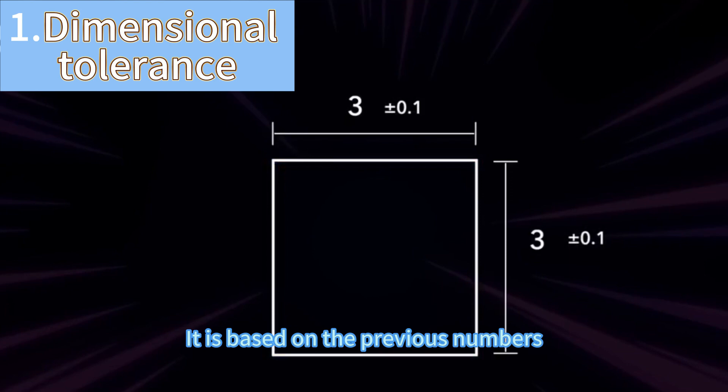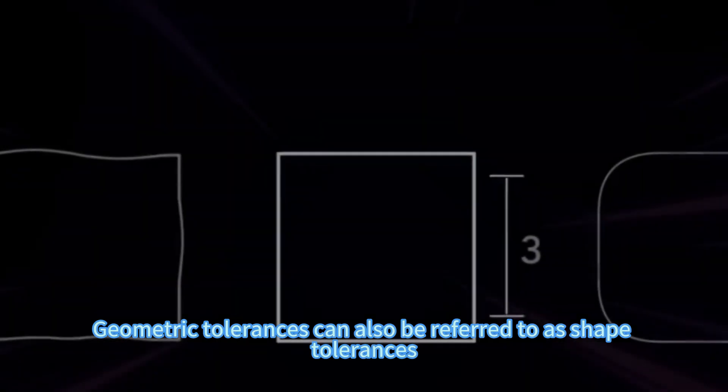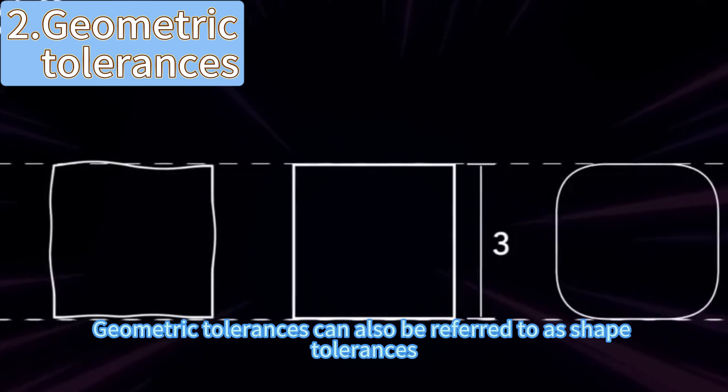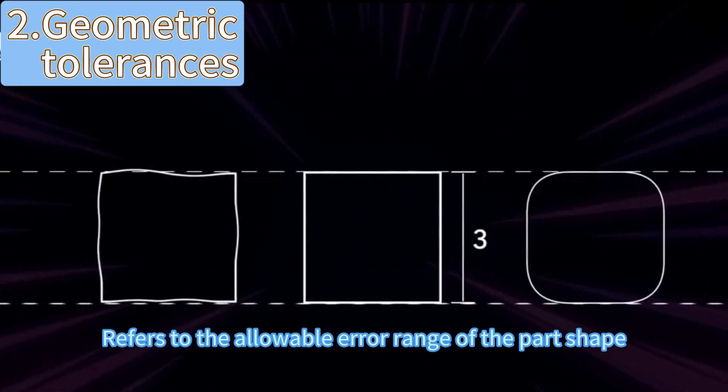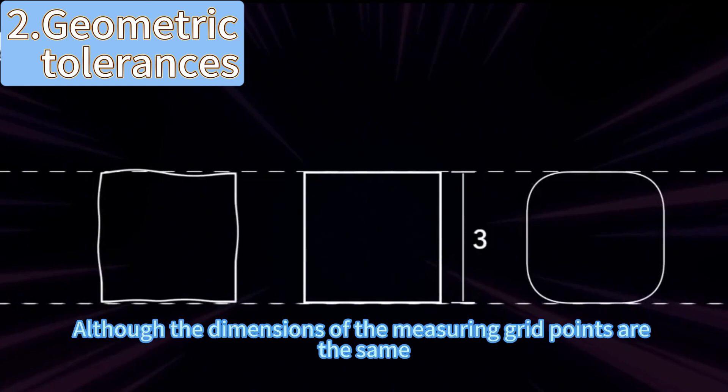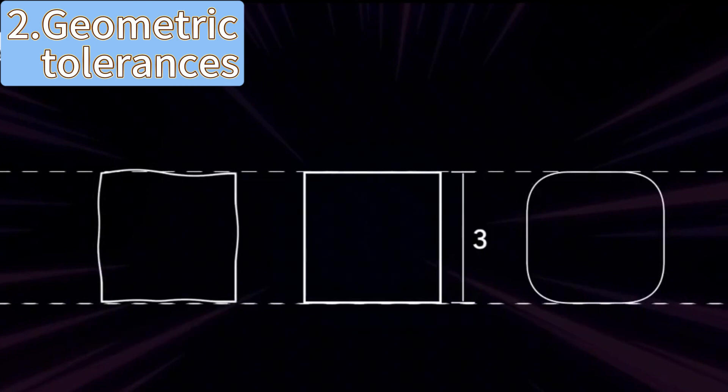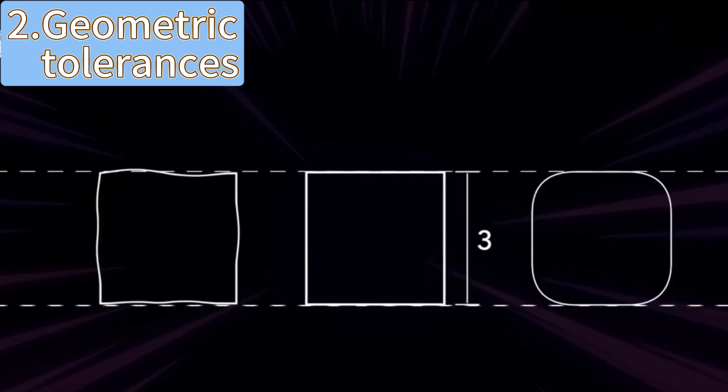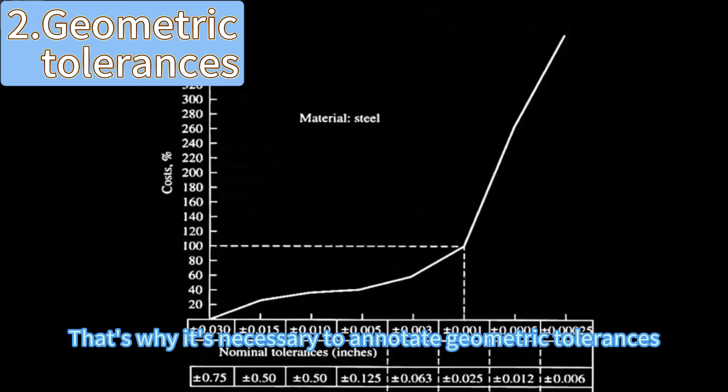Geometric tolerances, also referred to as shape tolerances, refers to the allowable error range of the part shape. Just like these three parts, although the dimensions of the measuring grid points are the same, due to some factors in the processing process there are still slight differences in shape. That's why it's necessary to annotate geometric tolerances.